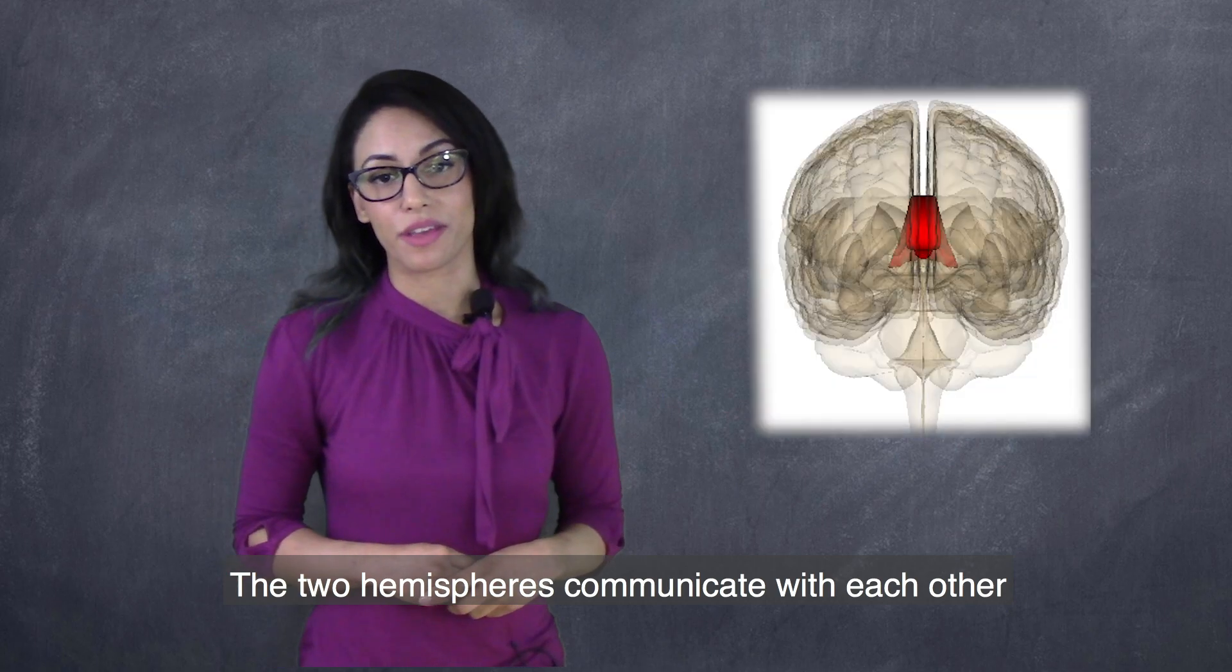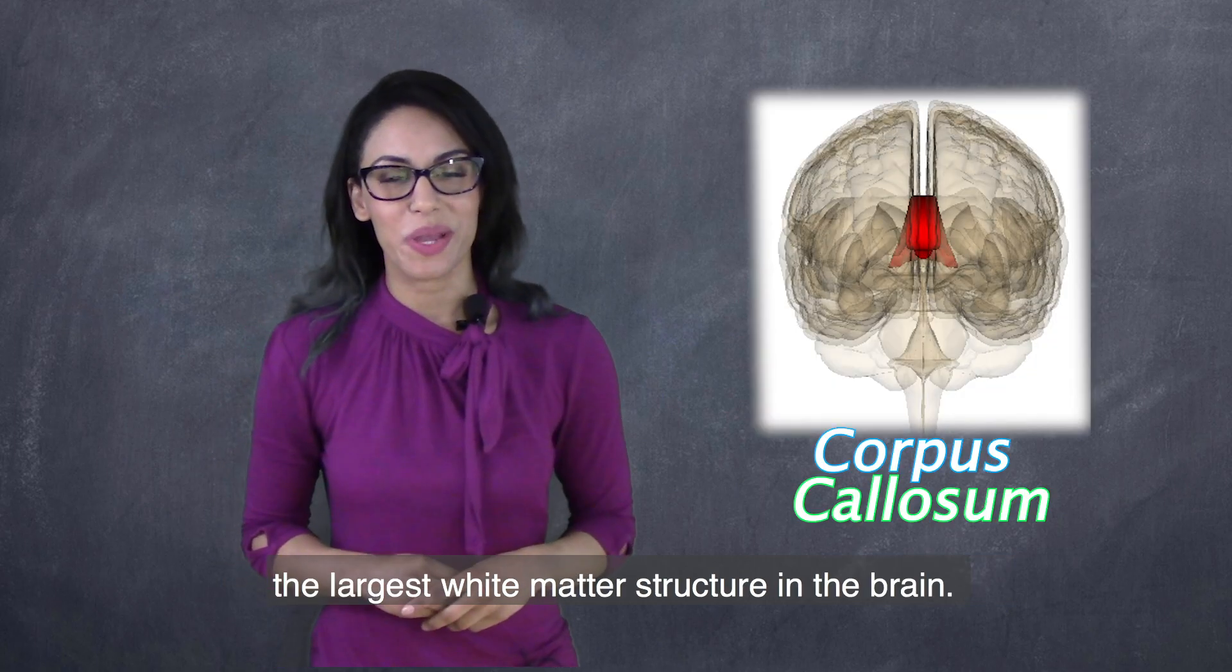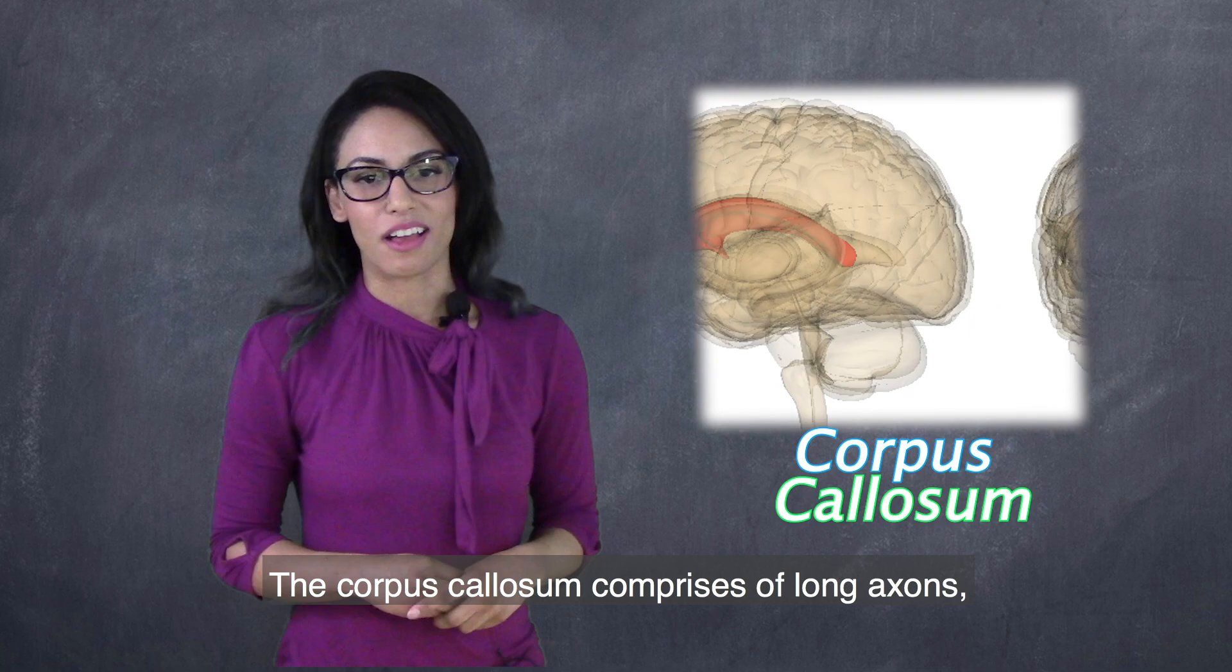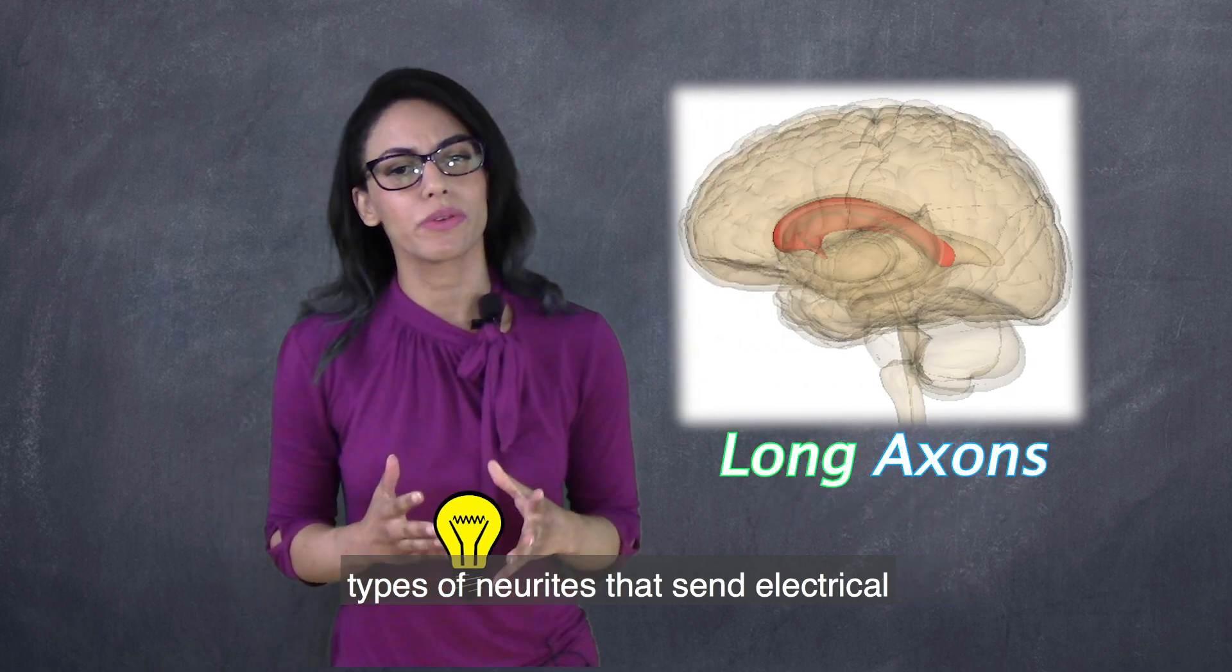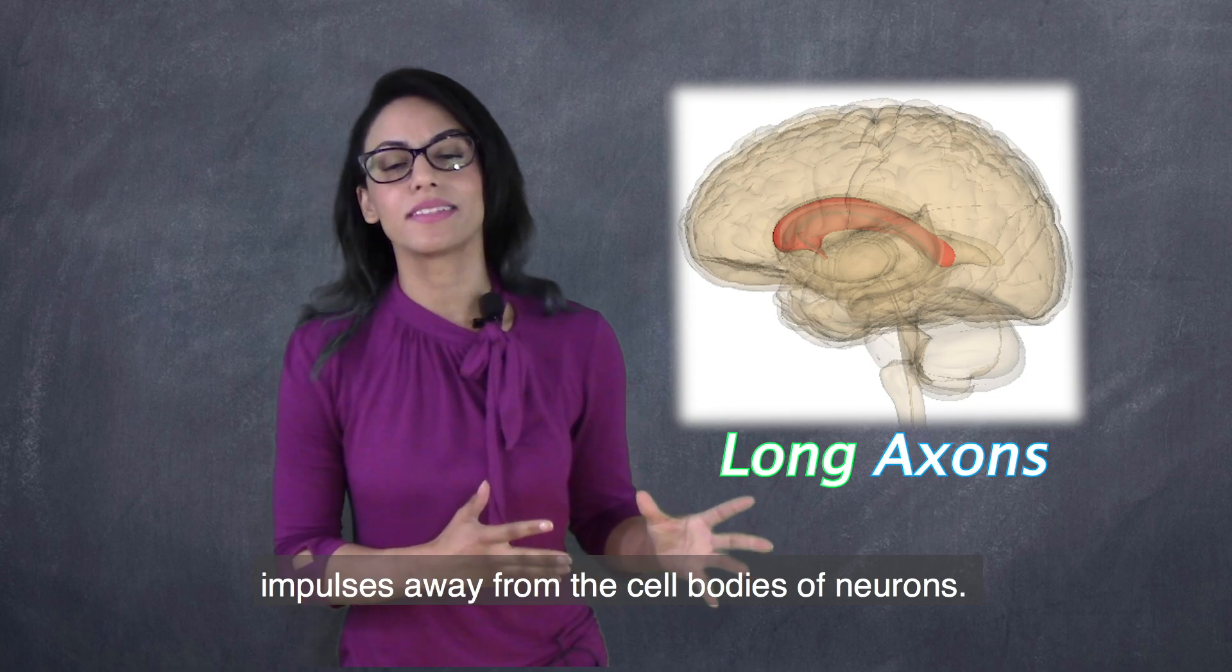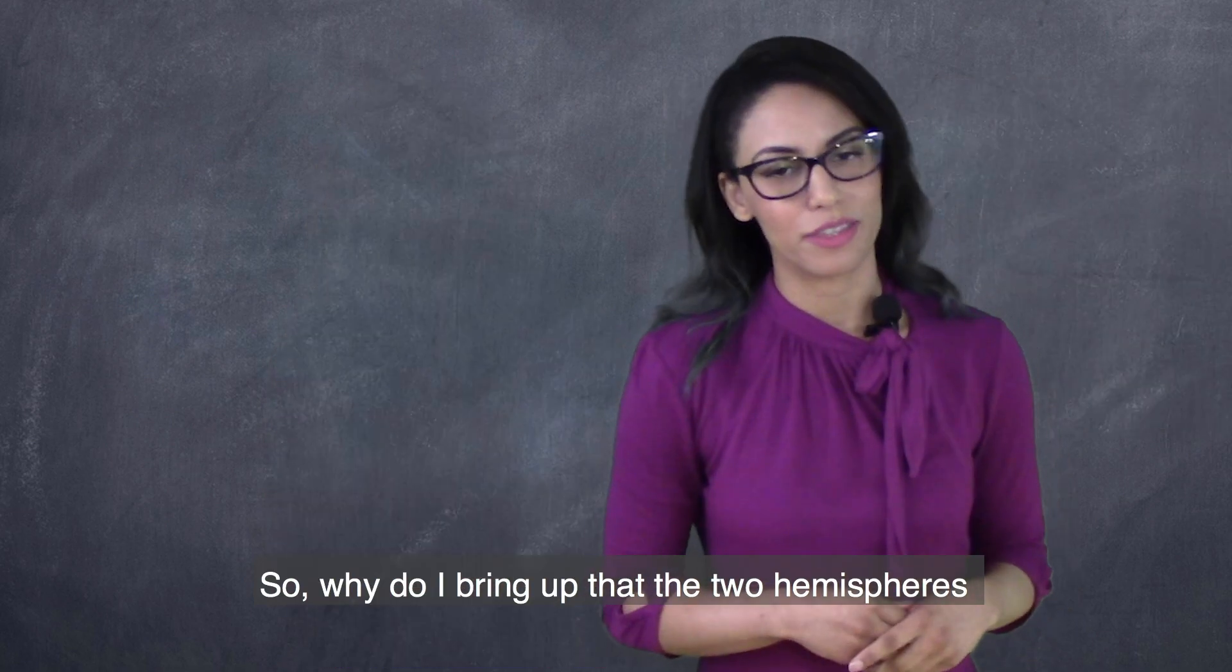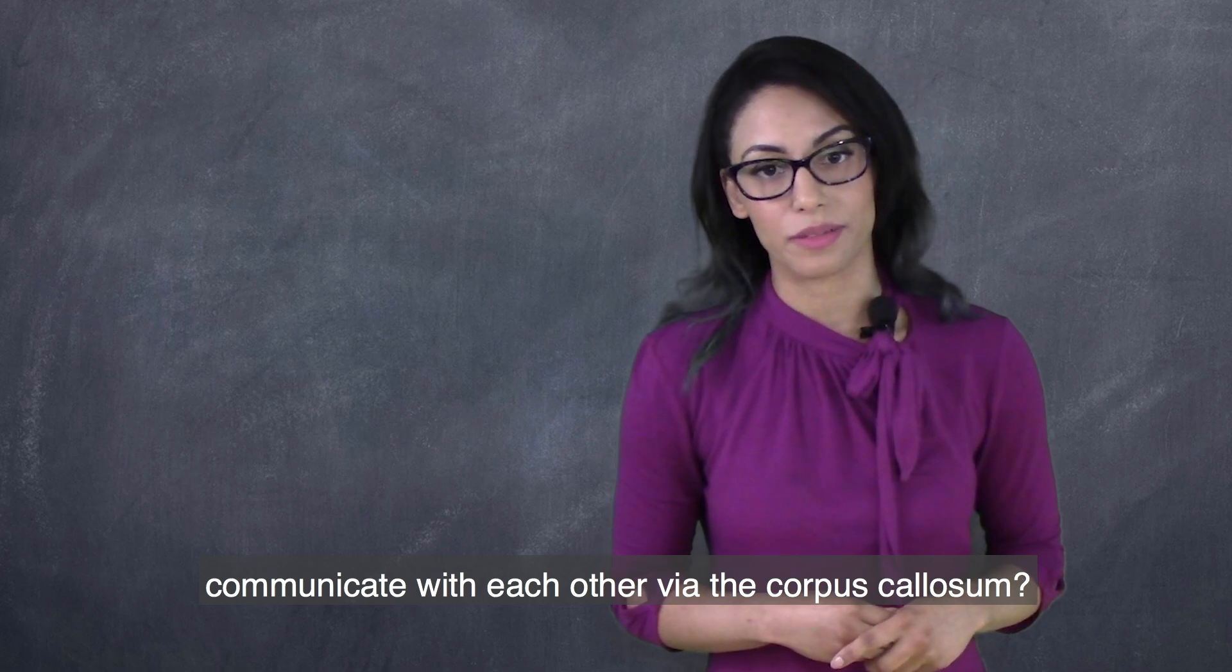The two hemispheres communicate with each other via the corpus callosum, the largest white matter structure in the brain. The corpus callosum comprises long axons, types of neurites that send electrical impulses away from the cell bodies of neurons. So why do I bring up that the two hemispheres communicate with each other via the corpus callosum?